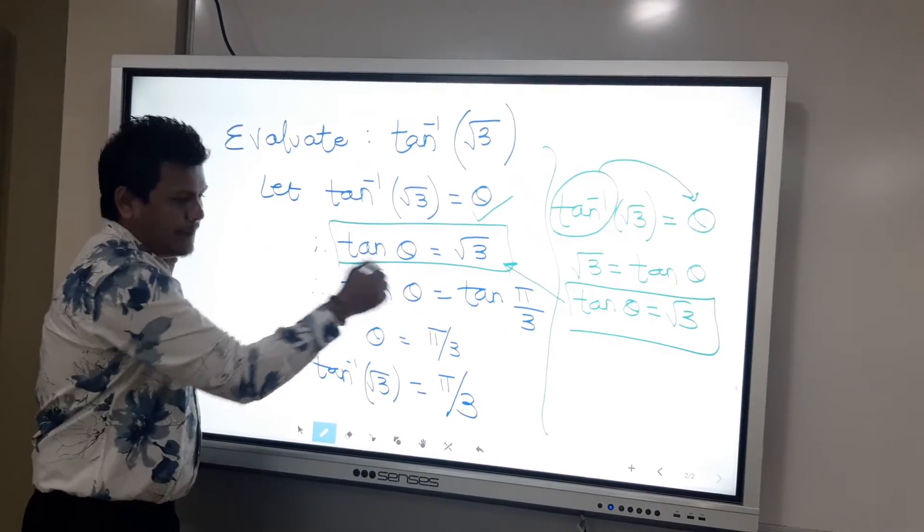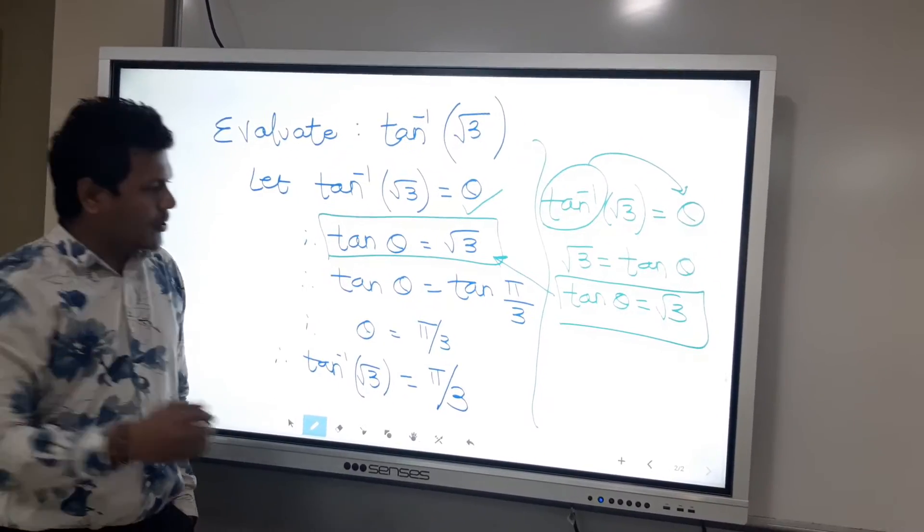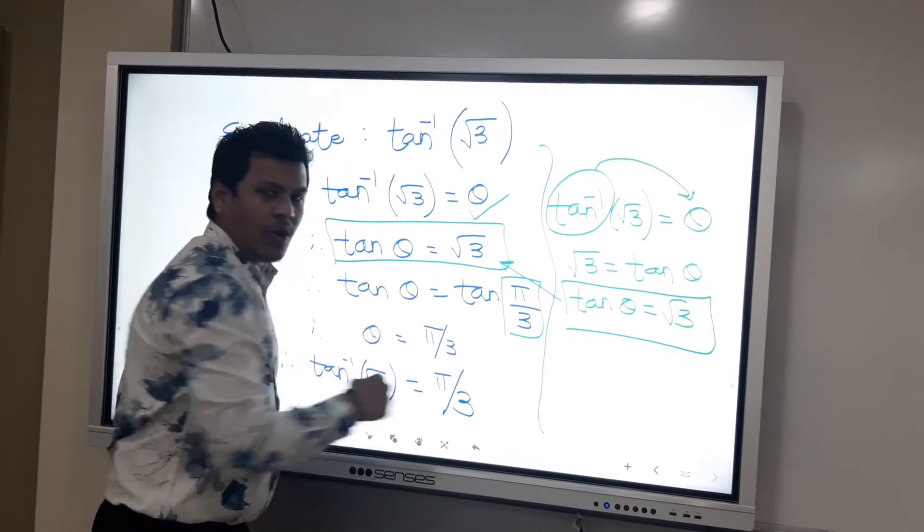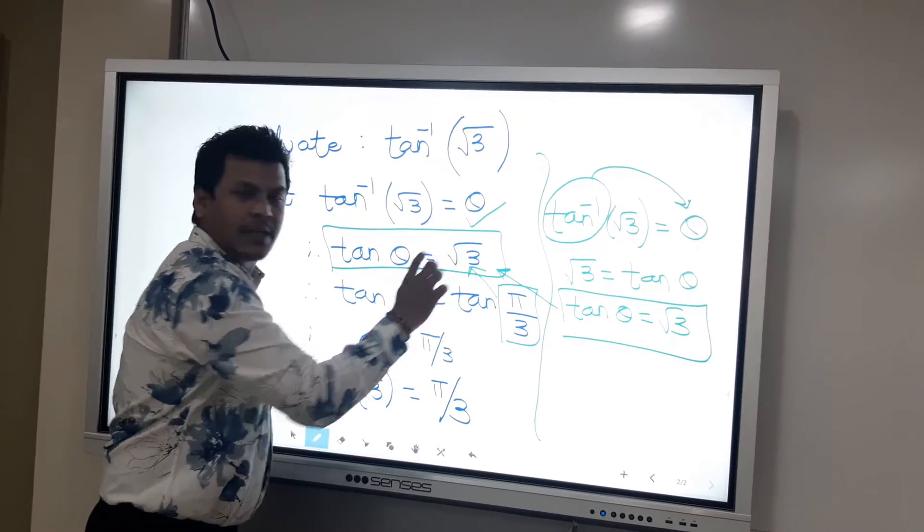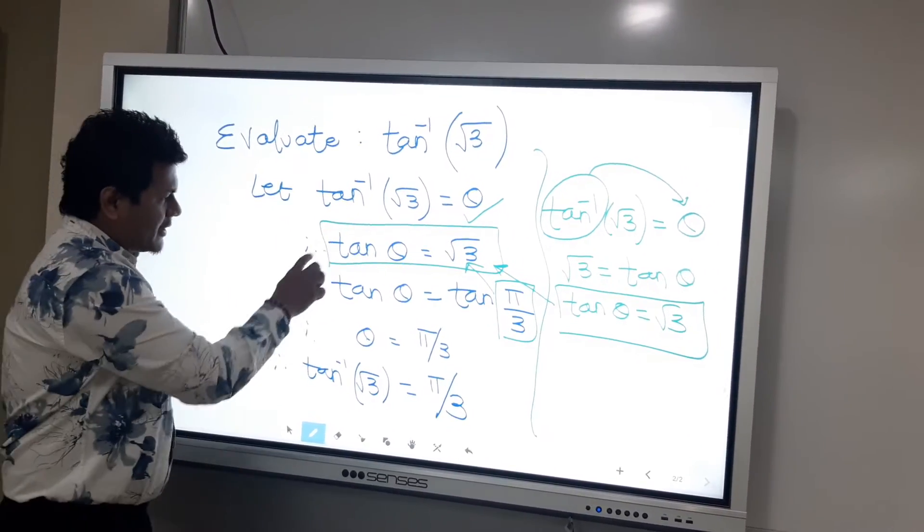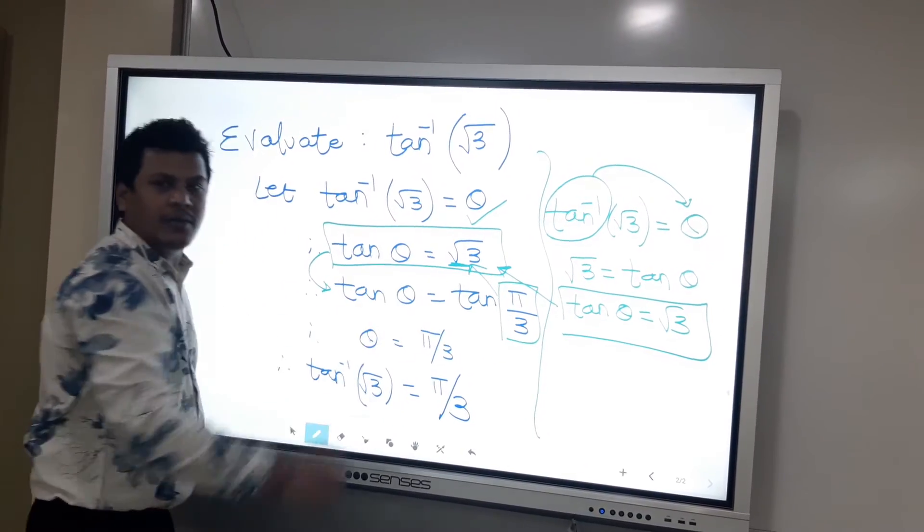In the next step, as per the trigonometric ratio table, tan pi upon 3, or you can say tan 60, will give you root 3. So in the next step, instead of root 3, we are writing tan pi upon 3.